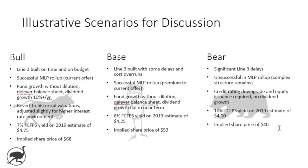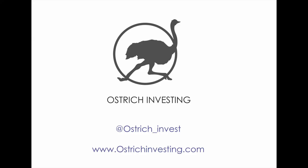So those are the three scenarios: in the bull case you could get close to $70 a share, in the base case a little bit above $50 — about 15% appreciation from today — and in the bear case, downside of about $6 a share down to $40. Let me know what you think — which scenario do you think is most likely? Have I missed anything, or do you have a different take? Hopefully you've enjoyed the segment on Enbridge. If you liked the video, please hit the thumbs up, subscribe to Ostrich Investing, and check us out at our website or on Twitter. Until next time, happy investing, and please don't bury your head in the sand.